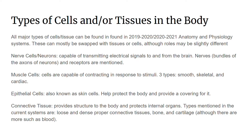Types of cells and/or tissues in the body. All four types of cells or tissue mentioned below are found in this year's three events. Cells and/or tissues can be swapped interchangeably, but this slightly changes the roles, and you do have to pay attention to what is mentioned below because this may change as well. Nerve cells or neurons are capable of transmitting electrical signals to and from the brain. Nerves, bundles of the axons of neurons, and receptors are mentioned in the three events of anatomy and physiology.